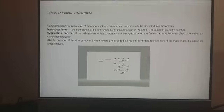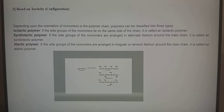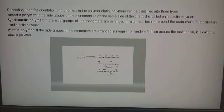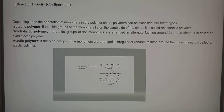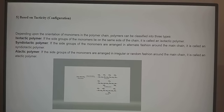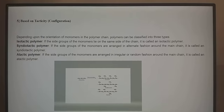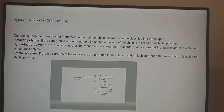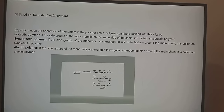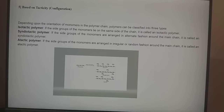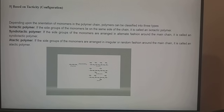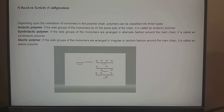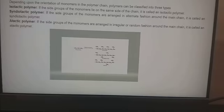The next category is based on tacticity. Tacticity is basically the configuration, or stereo orientation, of the monomeric units in the polymer chain. Depending upon this orientation, polymers are classified into three types. In an isotactic polymer, the side groups of the monomers lie on the same side of the chain. In a syndiotactic polymer, the side groups are arranged in alternating fashion around the main chain. In an atactic polymer, the side groups are arranged in an irregular or random fashion around the main chain.